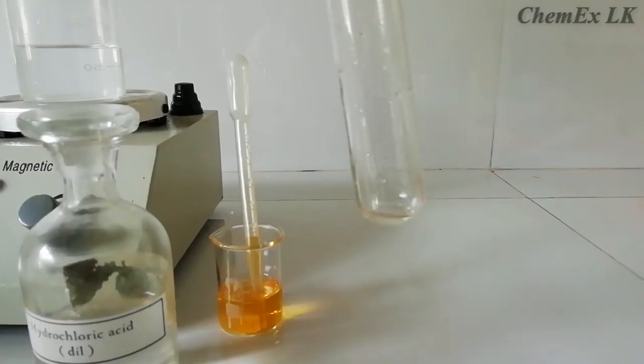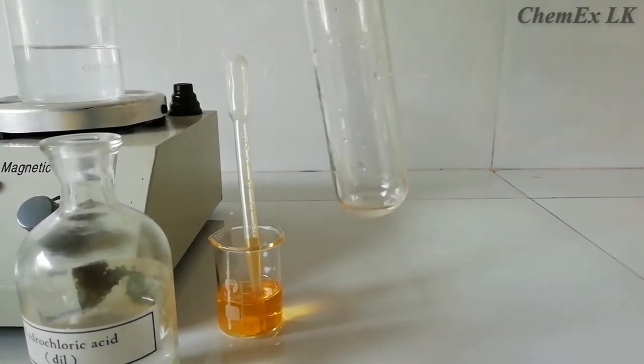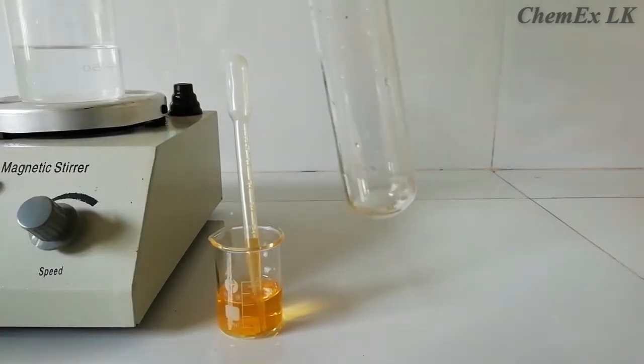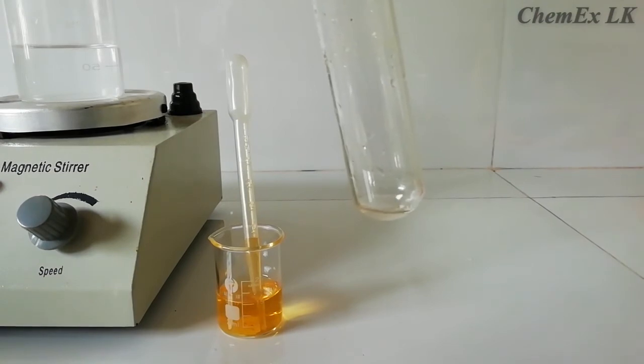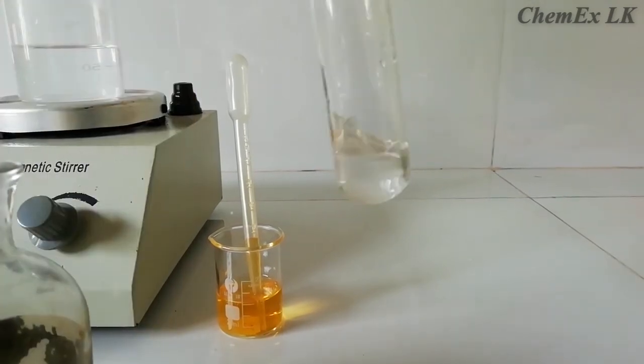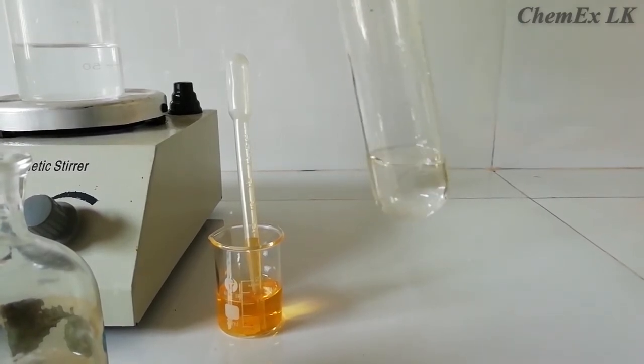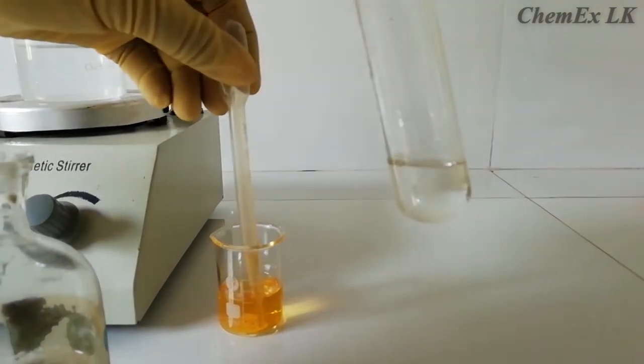After boiling the solution, here is our solution. Now we need to acidify this solution by adding dilute hydrochloric acid. Okay, that would be enough. So now we need to observe a color. We need to add dilute solution of ferric chloride.